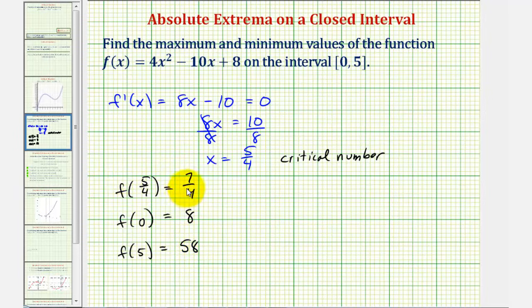Notice how the smallest function value is seven fourths. This is the minimum value, and the largest value is fifty-eight, which would be the maximum value of this function on the closed interval. So the absolute minimum, or the minimum value, is seven fourths at x equals five fourths.